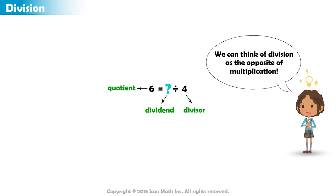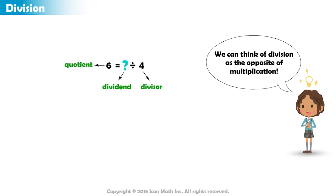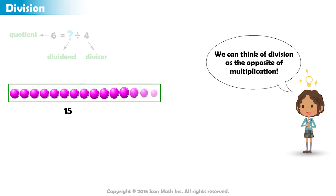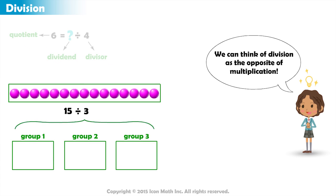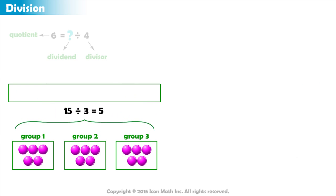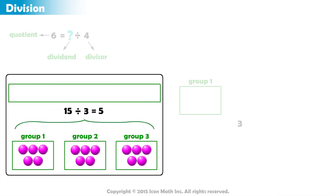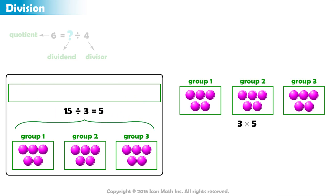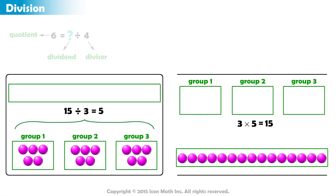We can think of division as the opposite of multiplication. For example, dividing a total of 15 elements into 3 groups, where we have 5 elements in each group, is the opposite of having 3 groups of 5 elements each, and we will have a total of 15 elements.